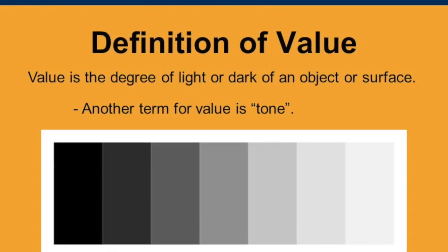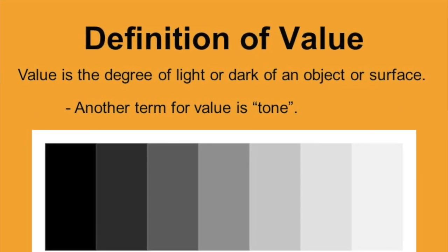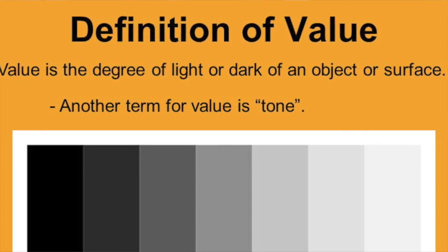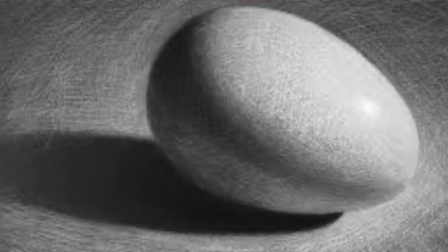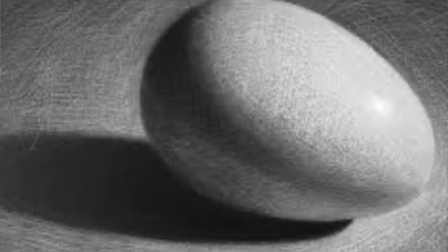Value is one of the seven art elements, and value deals with the lightness or darkness of a color. It can also be created when a light source shines upon an object and creates a highlight, as well as form shadows and help that object cast shadows.